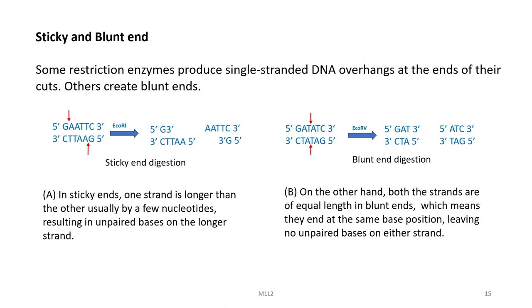When restriction enzymes recognize and cut a particular sequence, they may yield two types of ends: a sticky end or a blunt end. For example, when EcoRI digests its sequence, the type of ends it creates are sticky ends, but EcoRV generates a blunt end digestion. In a sticky end, one strand is longer than the other by a few nucleotides, producing overhangs. In blunt end digestion, both strands are equal in length, ending at the same base position leaving no unpaired bases.